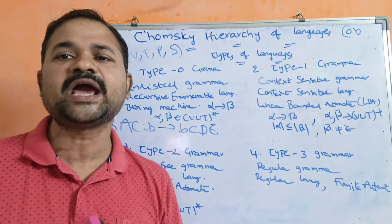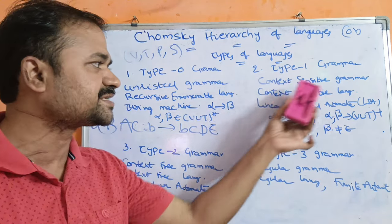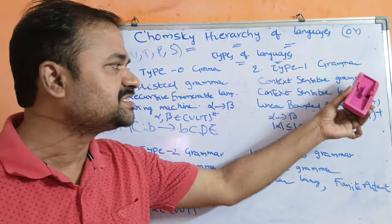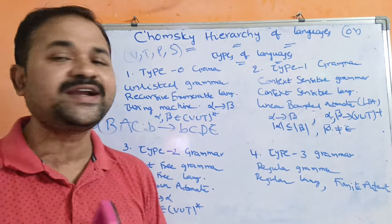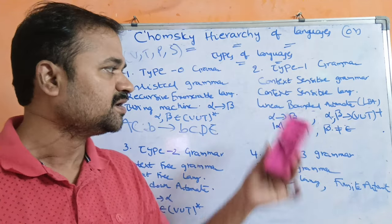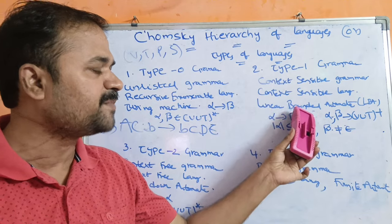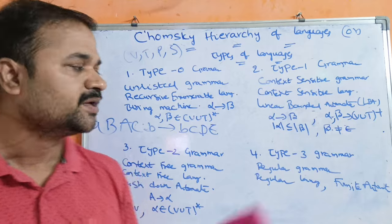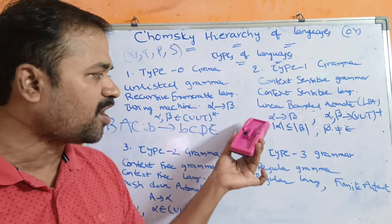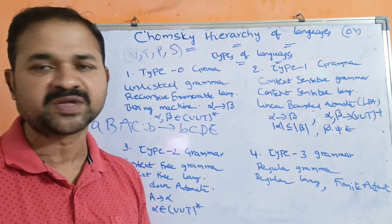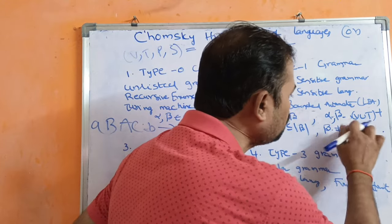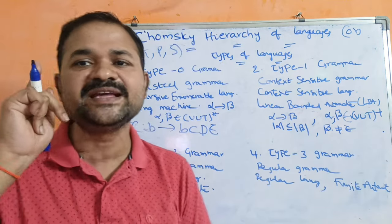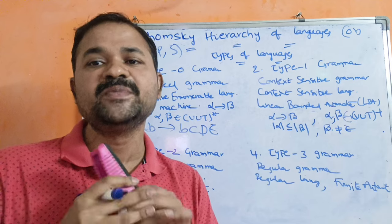Now let us see about type 1 grammar. Type 1 grammar is also called as context sensitive grammar, in short CSG. Context sensitive grammar generates context sensitive language, CSL. Context sensitive languages are accepted by linear bounded automata, in short LBA. Here the productions are represented in the form alpha implies beta, but here alpha and beta belong to (V union T) whole power plus. Plus means minimum one occurrence.